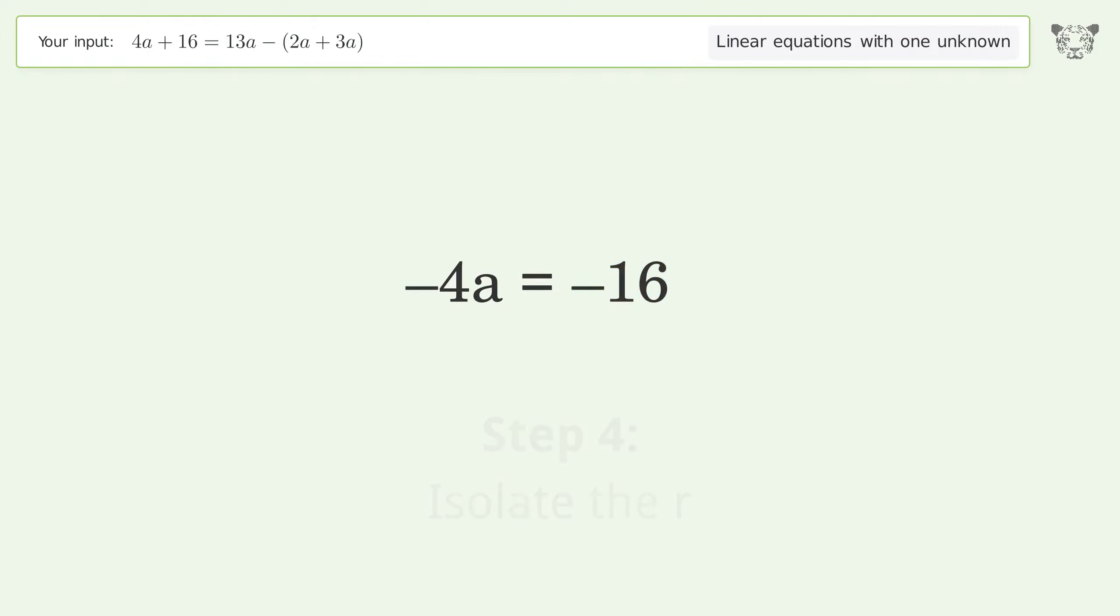Isolate the A. Divide both sides by negative 4. Cancel out the negatives. Simplify the fraction. Cancel out the negatives.